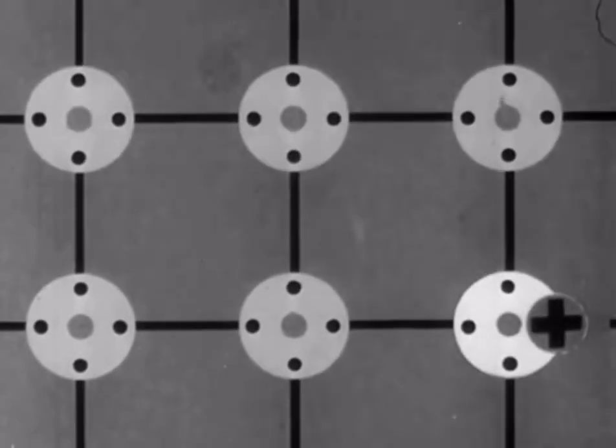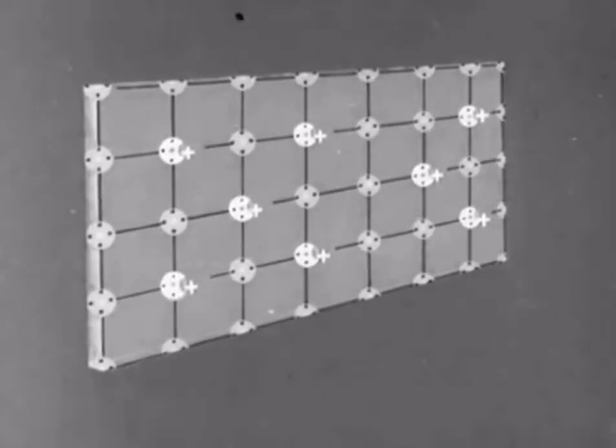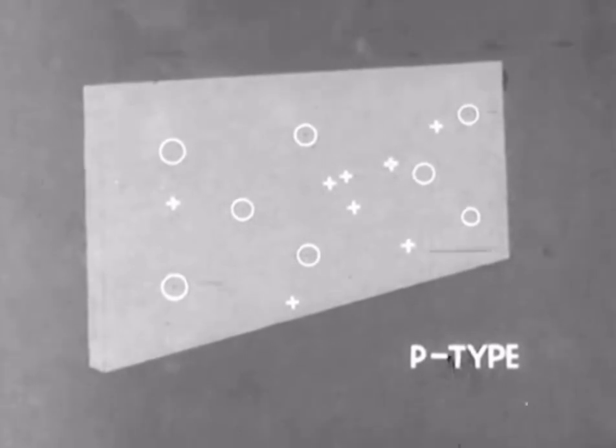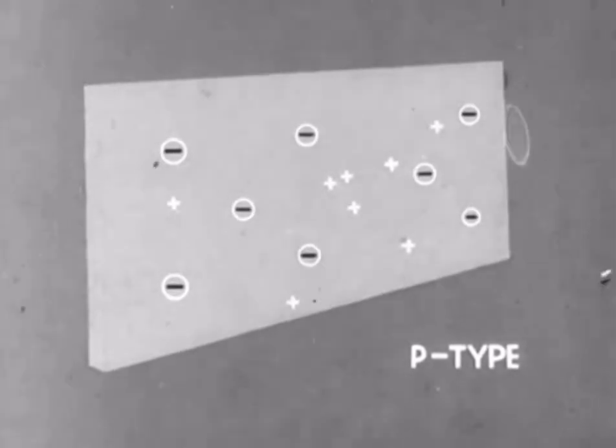In fact, we can go further and look upon these holes as positive carriers of electricity, free to move about this material, just as electrons move about the N-type material. A semiconductor like this is known as P-type, P for positive carrier. The impurity atoms, because they try to collect electrons, are known as acceptor atoms.